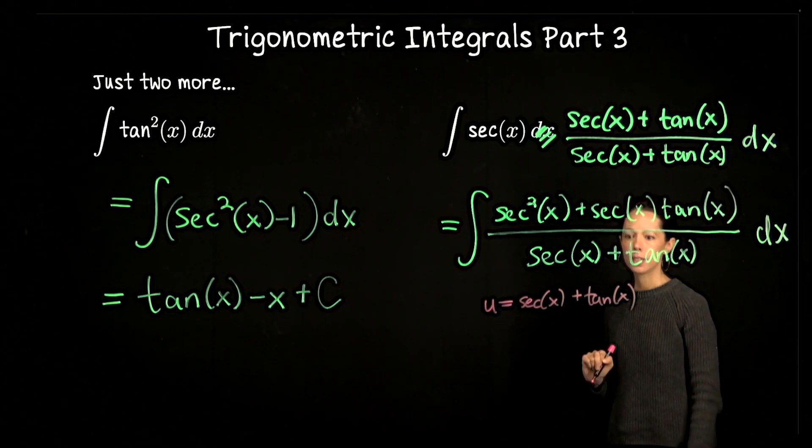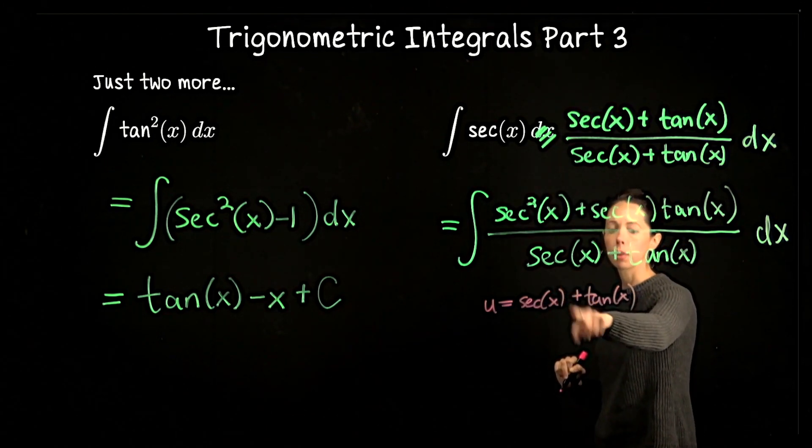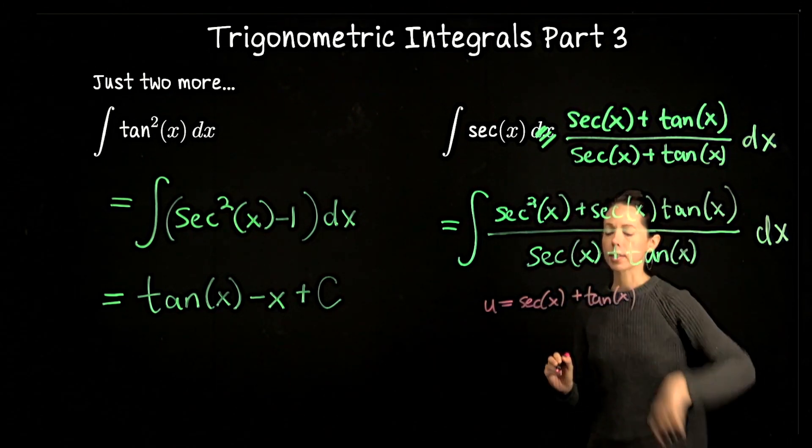Then du is going to be sec(x)tan(x) + sec²(x), or in other words, it's our numerator.